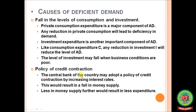Another cause of deficient demand is the policy of credit contraction. When the central bank adopts the policy of credit contraction by increasing interest rates on lending, commercial banks borrowing from the central bank face higher interest rates for credit creation. Commercial banks then charge higher rates to borrowers. This results in a fall in money supply because entrepreneurs and households are reluctant to borrow at high rates of interest. With lesser money supply, there is lesser expenditure, lesser investment, lesser employment, lower output, and lower income in the economy.